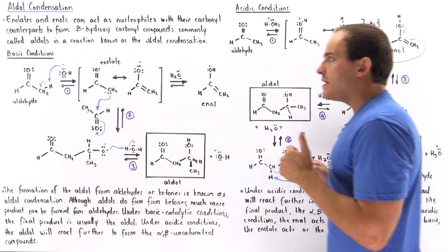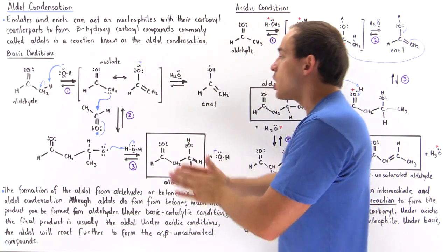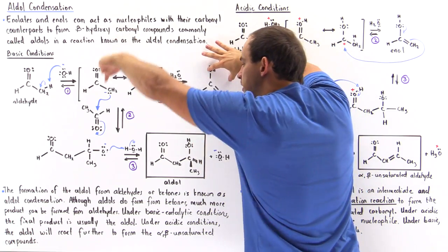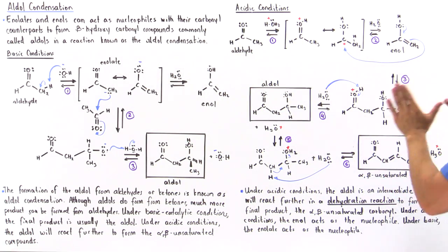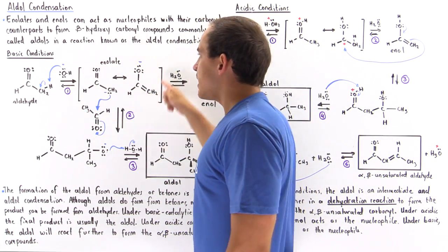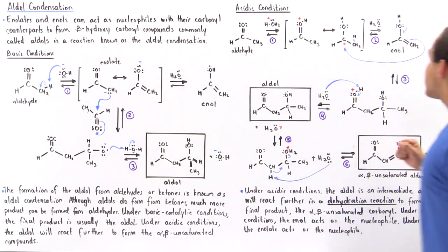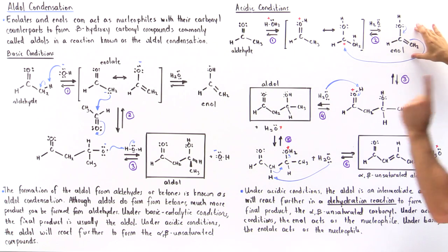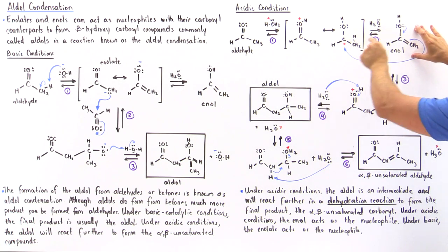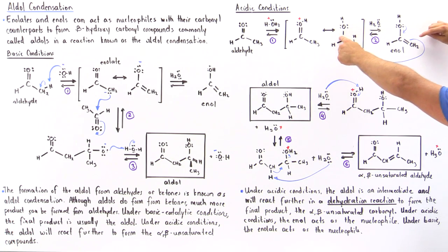This is a major difference between the aldol condensation under basic conditions and under acidic conditions. Under basic conditions, we do not have to form the enol to actually form our aldol, but under acidic conditions we have to form the enol for the aldol reaction to actually take place. Under basic conditions, the enolate acts as our nucleophile. Under acidic conditions, the enol acts as our nucleophile. The enol isn't as good a nucleophile compared to our enolate, so the enol cannot react with the aldehyde directly but will react with the protonated aldehyde intermediate. The enol uses its pi bond to form a sigma bond between our two carbons.